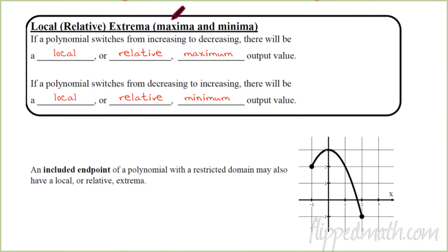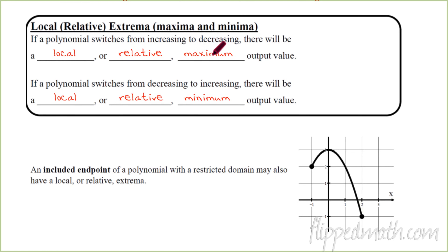Next, we're going to move to local and relative extrema, which are maxima and minima — those are plural words. If a polynomial switches from increasing to decreasing, there will be a local or relative maximum. If it switches from decreasing to increasing, there'll be a relative or local minimum.